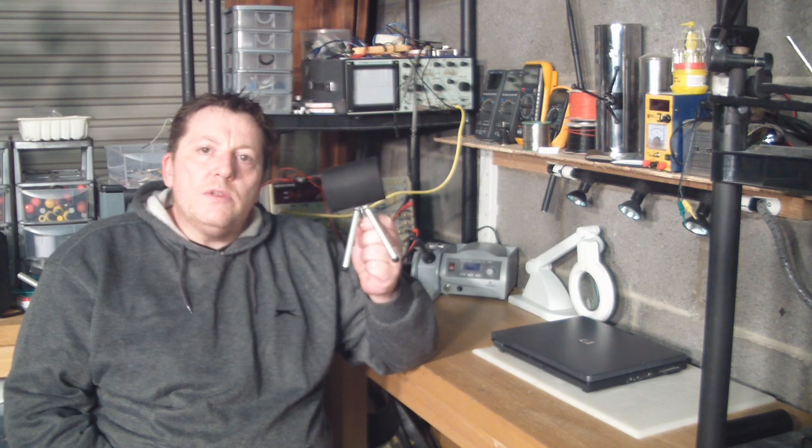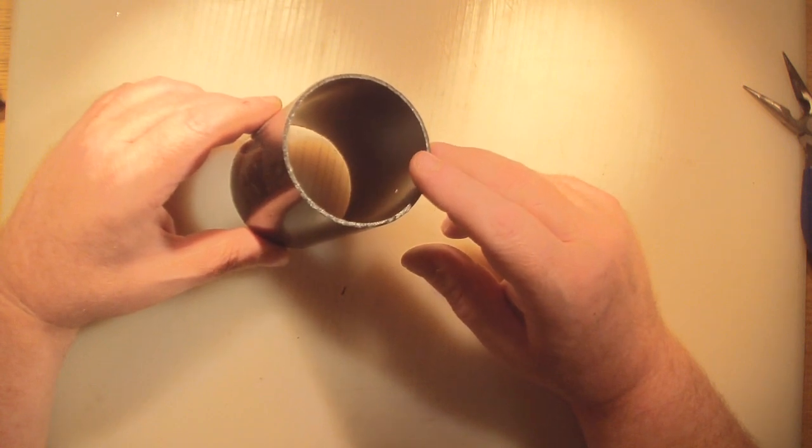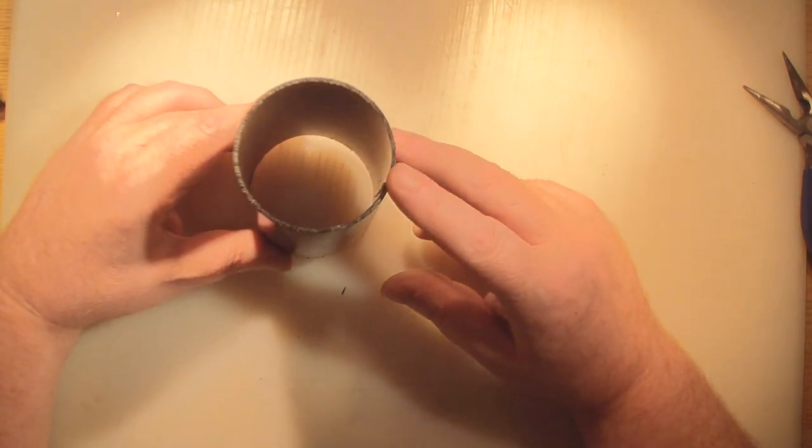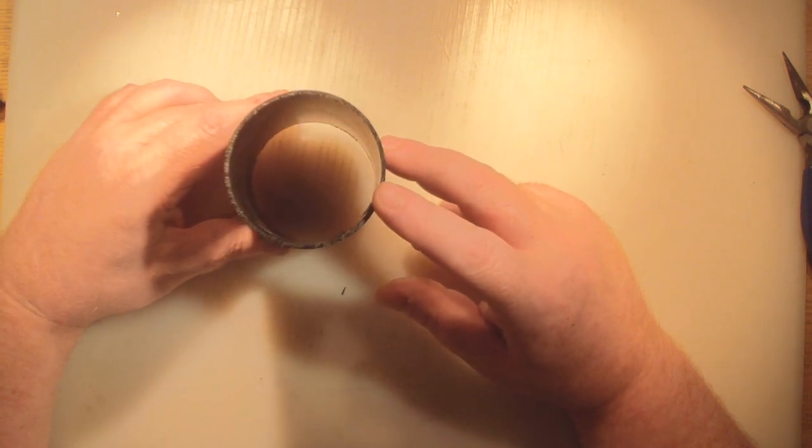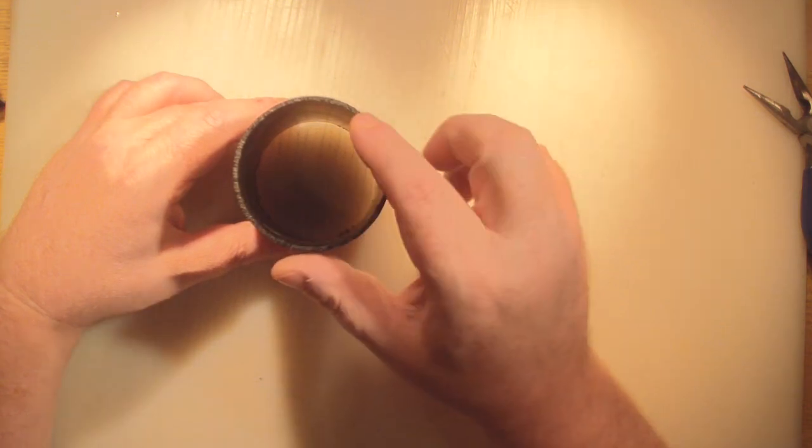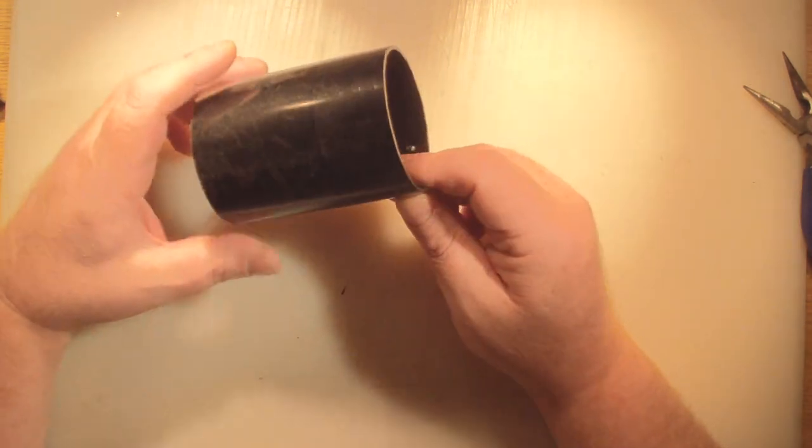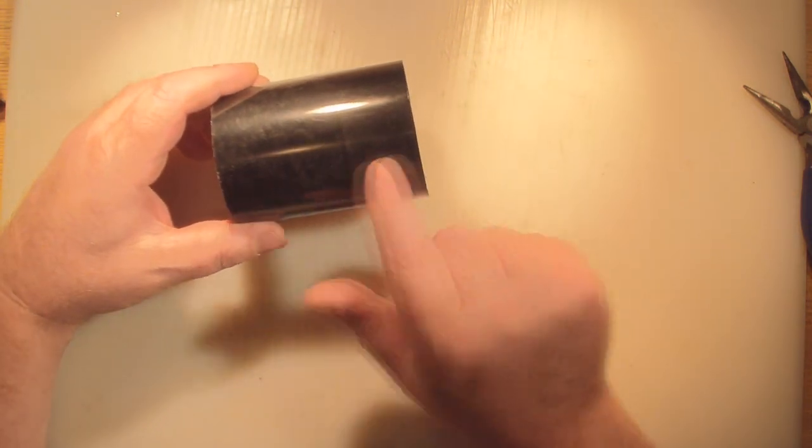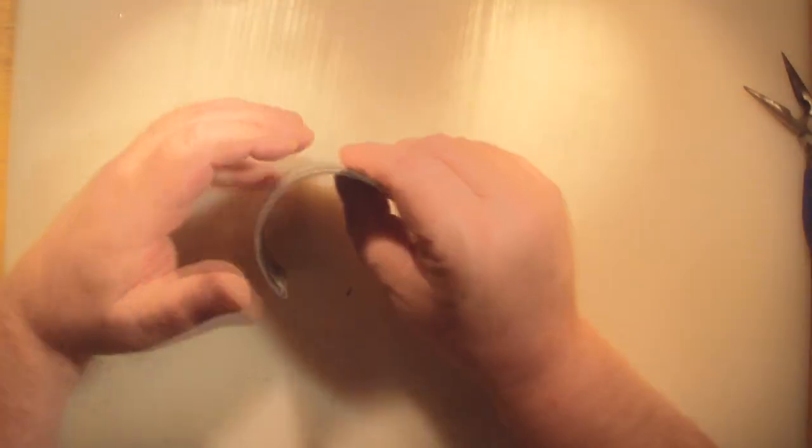The first thing we want to do before we start actually making the bi-quad antenna element is get yourself a piece of this waste downpipe for rainwater. It seems pretty standard, 70 millimeters diameter. I just picked this up from my local hardware store. You want to cut yourself a section off 80 millimeters long, and then once you've got that, you want to cut it in half so you end up with a piece like this.